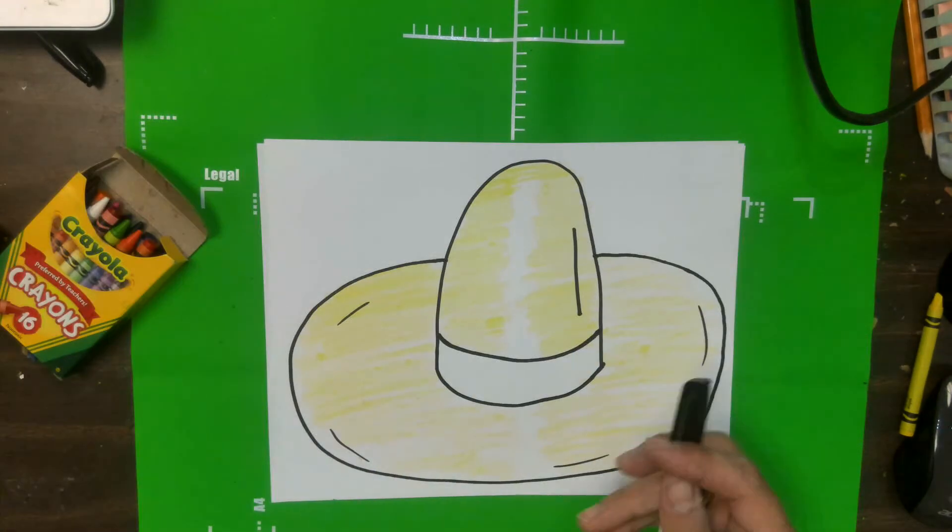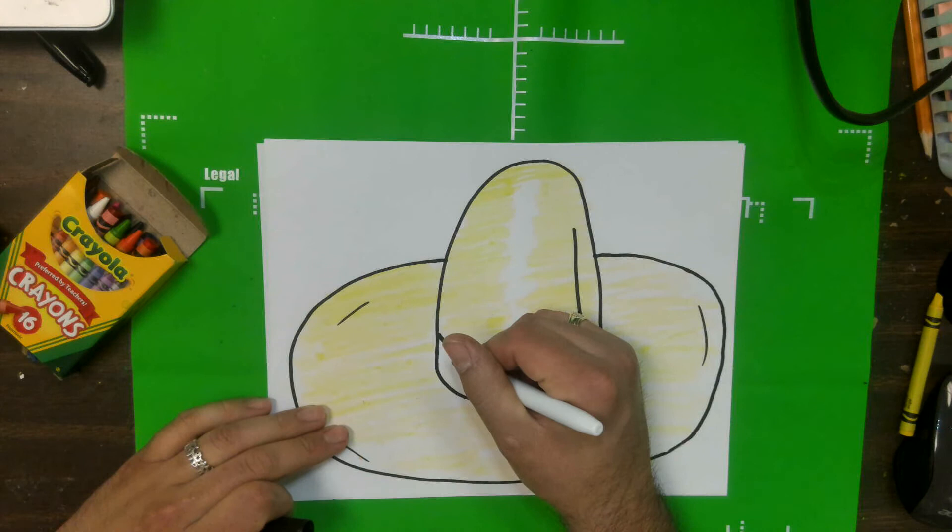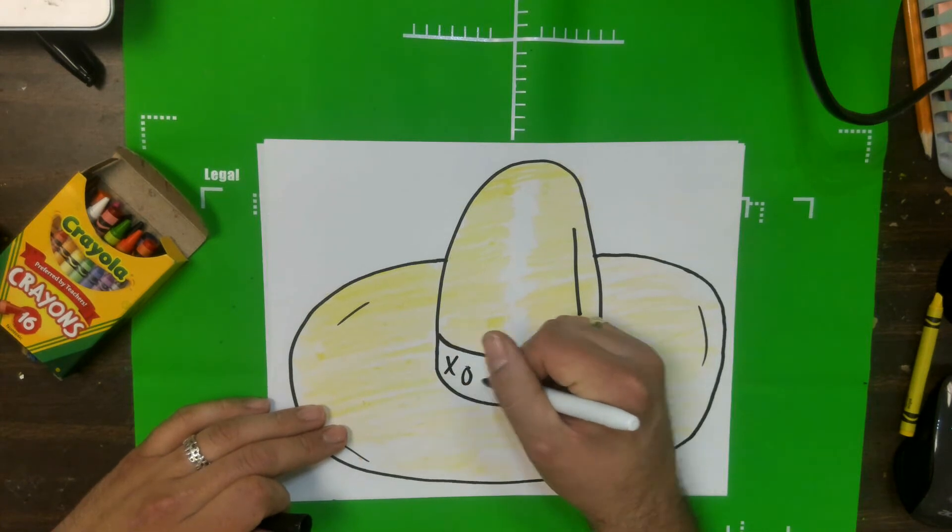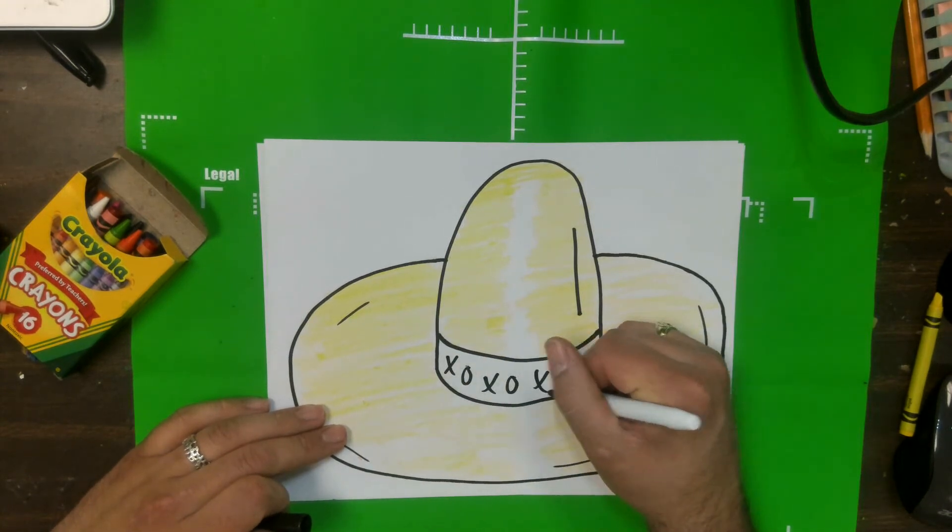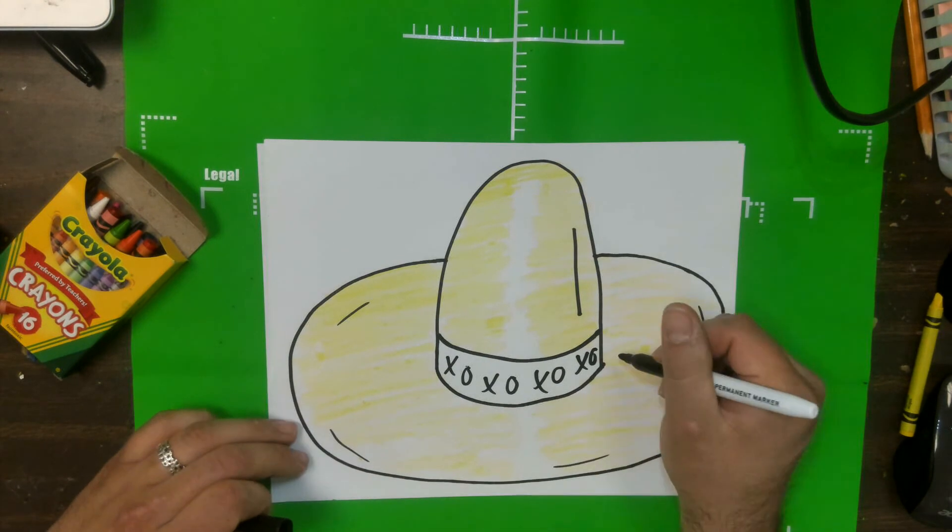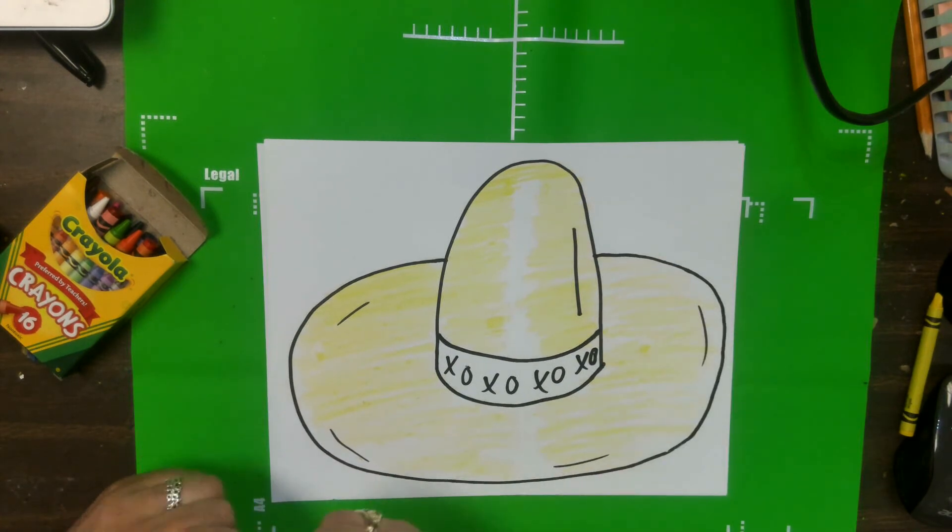But to keep it simple, I'm just going to do the XO, XO. So XO, XO, XO, XO, XO. Just like that. Let me fix that.